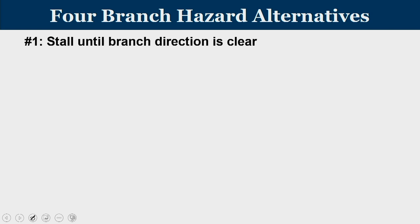During the time of fetching, by virtue of certain bits in the instruction, we know whether it is a branch instruction or not. The moment it is identified as a branch instruction, further fetching operations are temporarily stalled. Once the outcome of the currently fetched branch instruction is clear, we then fetch from the appropriate location.